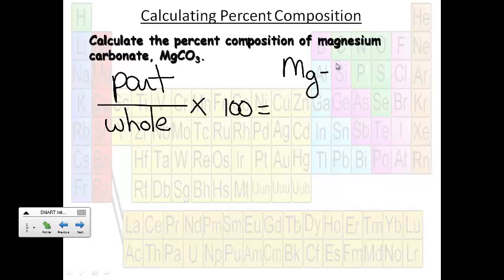So magnesium, we have one, so we're going to calculate the molar mass here. So 24.3. And then carbon, one carbon multiplied by the mass of carbon from the periodic table.